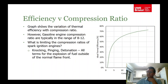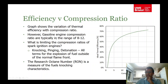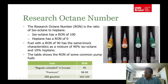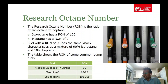The Research Octane Number (RON) is a measure of a fuel's tendency to knock — the higher the octane number, the higher the resistance to knocking. When you go to the forecourt you will see RON 95 fuels or RON 98 fuels.